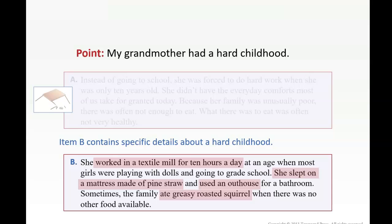Good. Now, it's not in the video, but take a look here. She worked in a textile mill for ten hours, she slept on a mattress, she used the outhouse, and she ate greasy roasted squirrel. We have four major details here. Now, if we wanted to turn this into an essay, how many body paragraphs would we have? Four, one for each of these. How long would the paragraph be? Six. We'd have the introduction, one, two, three, one, two, three, four body paragraphs, and then the conclusion.